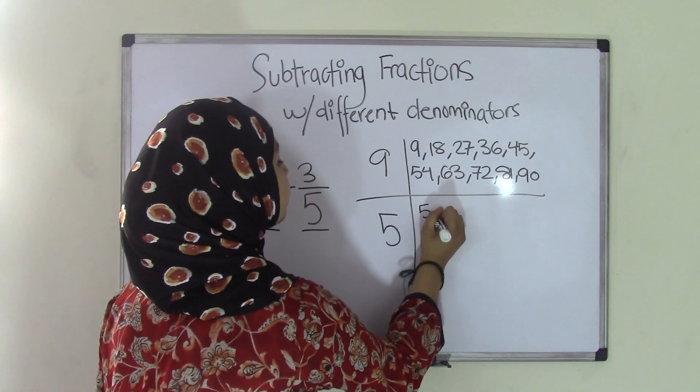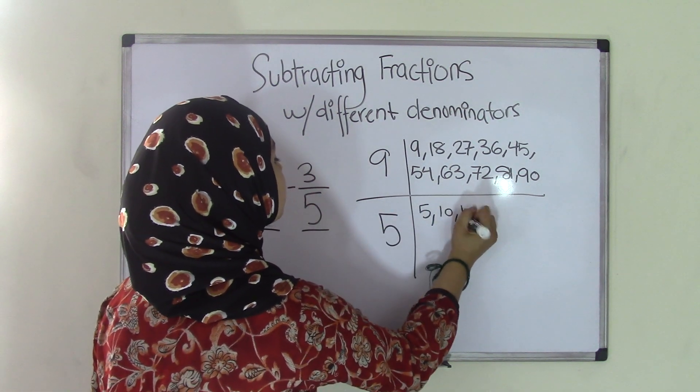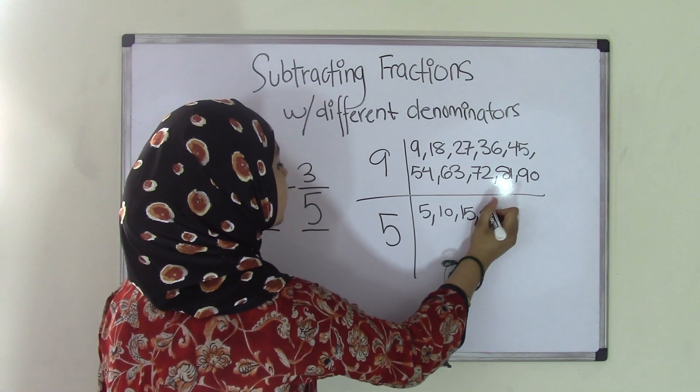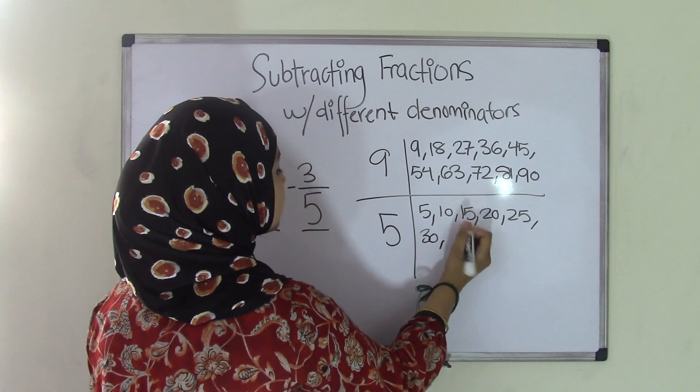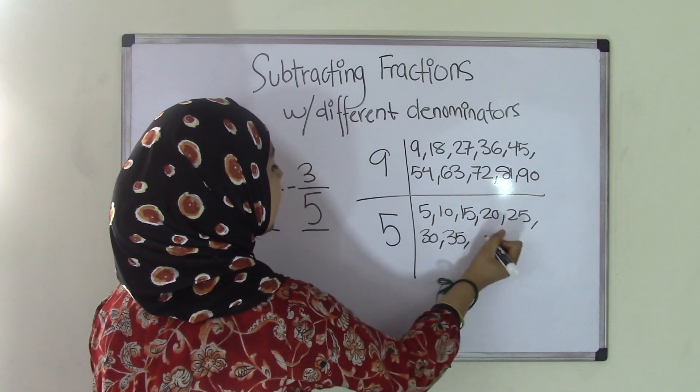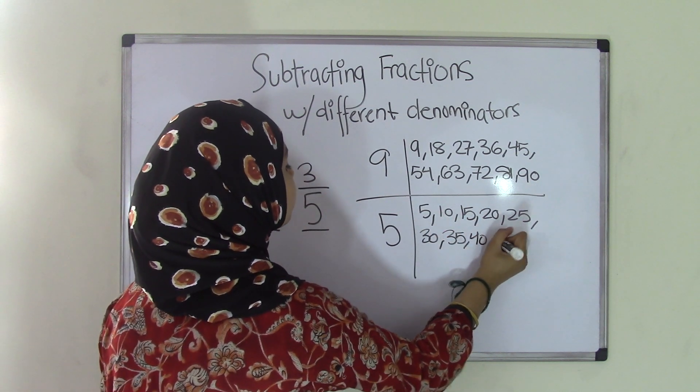So for 5, 5 times 1 is 5, times 2 is 10, times 3 is 15, 4 is 20, 5 is 25, 6 is 30, 7 is 35, 8 is 40, 9 is 45.